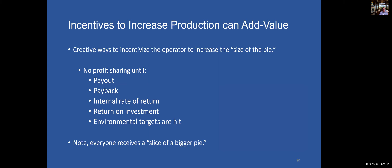Incentives to increase production can really add value. When negotiating, it's an opportunity to incentivize the operator to increase the size of the pie. Some ways: profit sharing contingent on a certain level of investment, with various metrics like payout, payback, internal rate of return, return on investment, or hitting environmental targets — something that really increases the size of the pie so everyone gets a bigger piece. Then competition comes in over what kind of slice each party takes. The number one goal should be to creatively increase as much value in the project as possible.